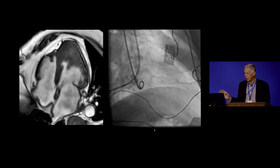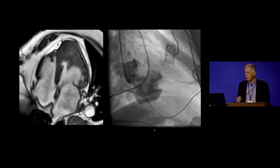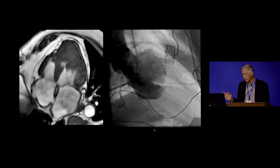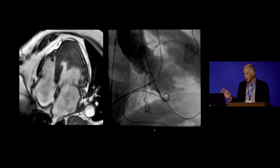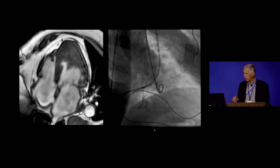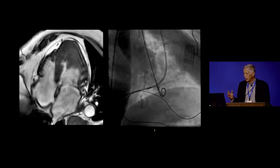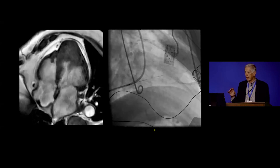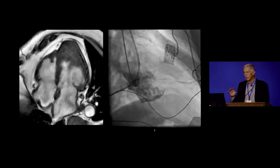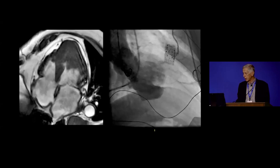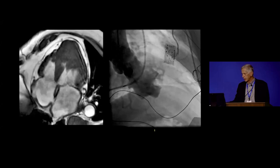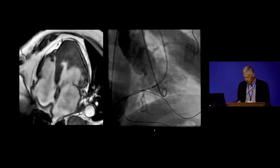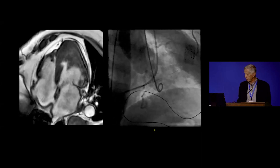Another group of patients are those with diastolic heart failure related to apical hypertrophic cardiomyopathy. The patients we see for surgery have encroachment on ventricular end-diastolic volume that contributes to their heart failure. You can see this on the ventriculogram — the distal ventricle appears cut off.